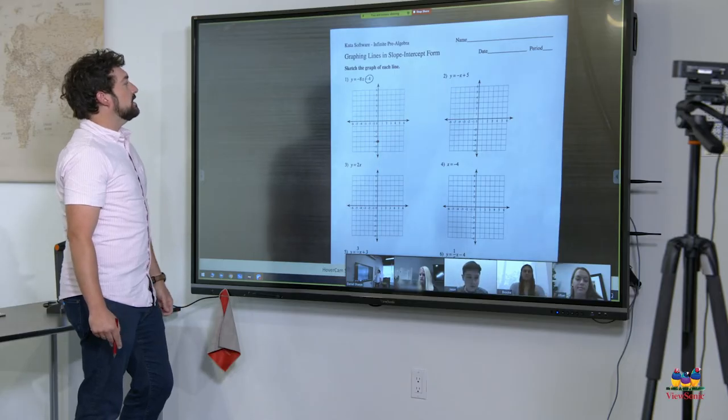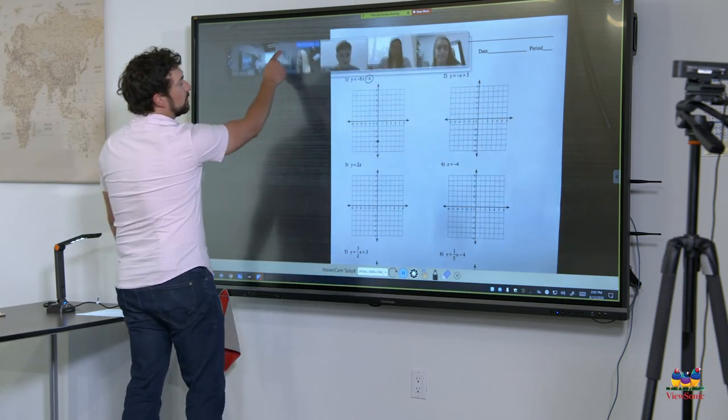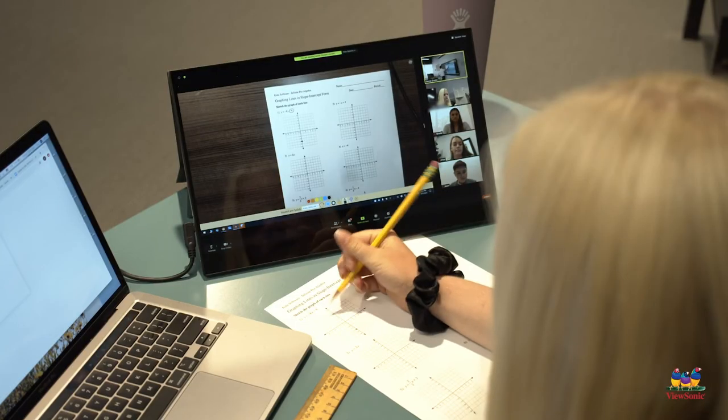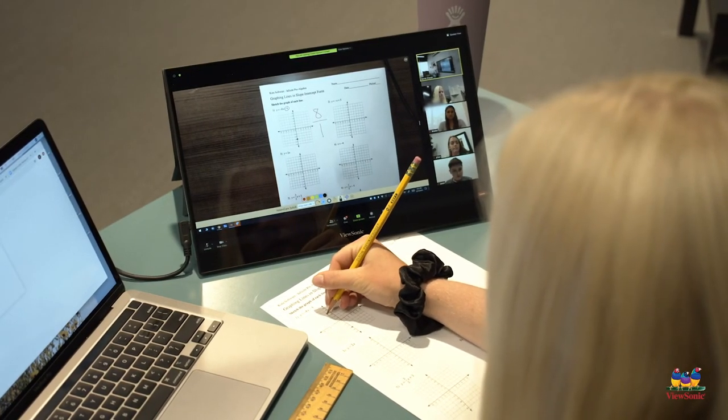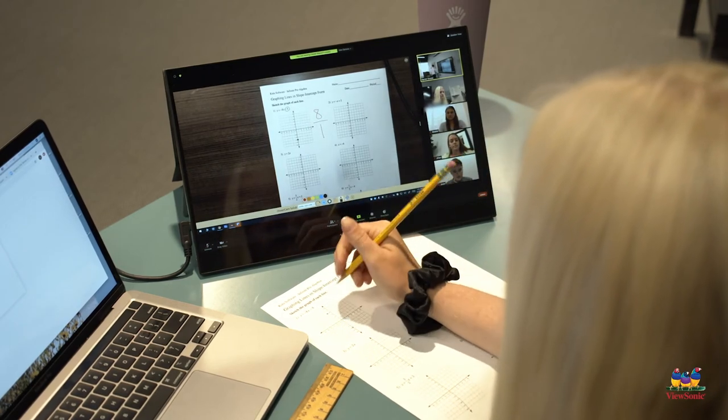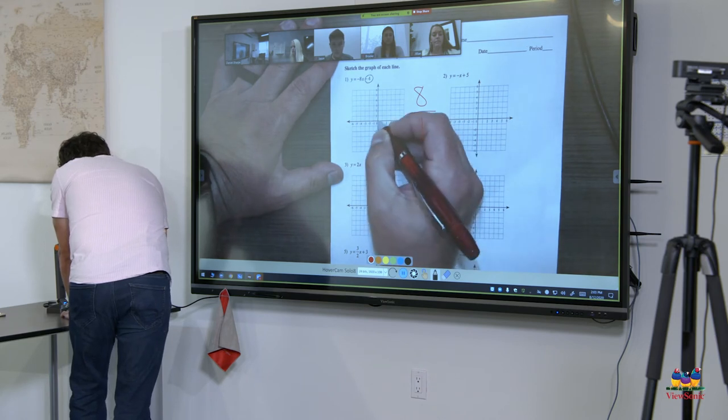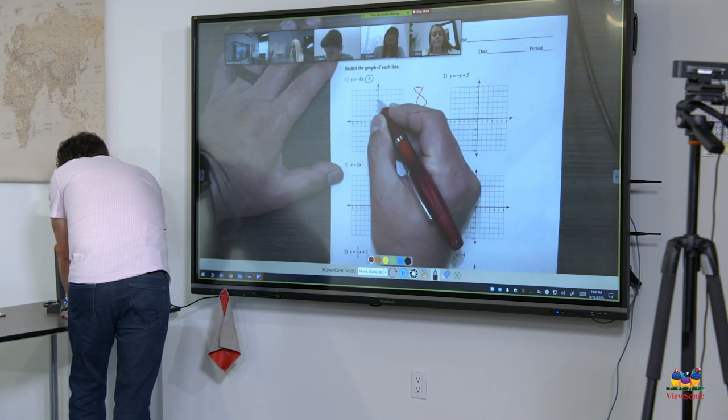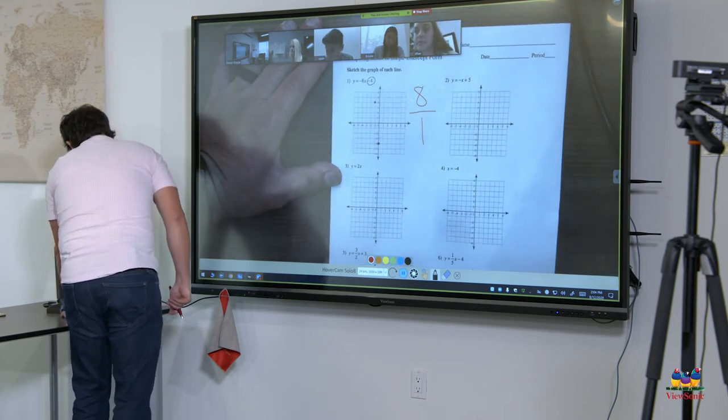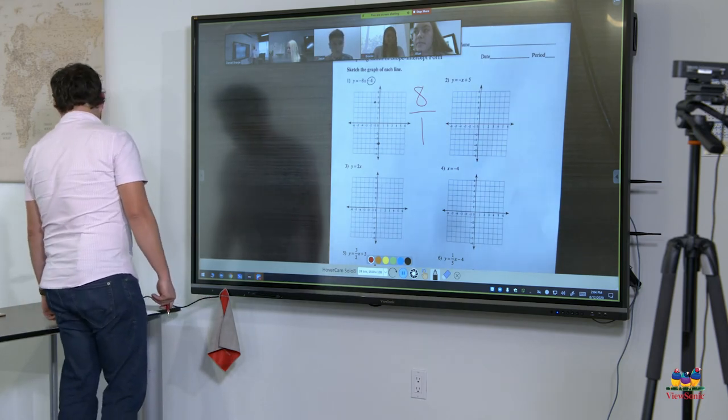Now, for this slope, it's eight over one. So, let me move the video over here really quickly. It's eight over one. But because it's a negative, right, we're going to go backwards or we're going to go to the left. So, we're going to count up eight. One, two, three, four, five, six, seven, eight. And then to the left, one. So, our coordinates should be negative one, four. And then we're just going to connect the two dots with the line.